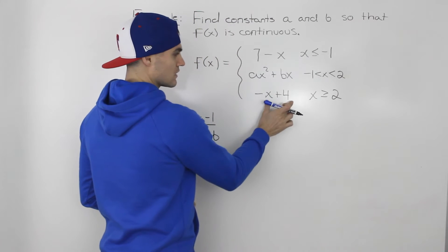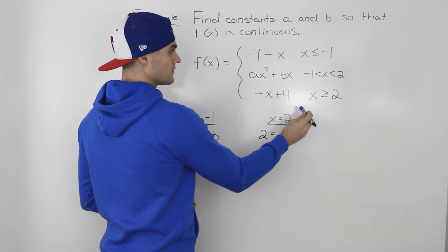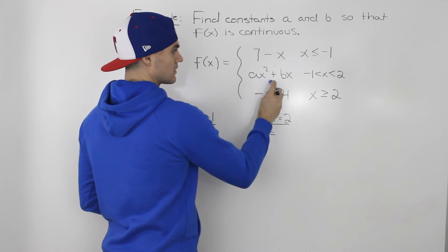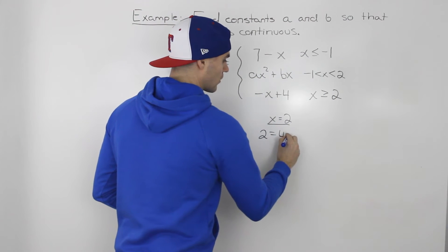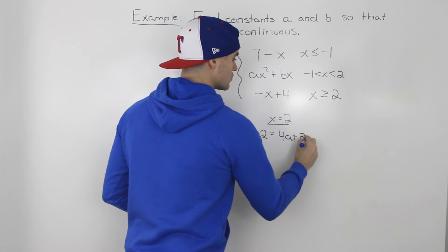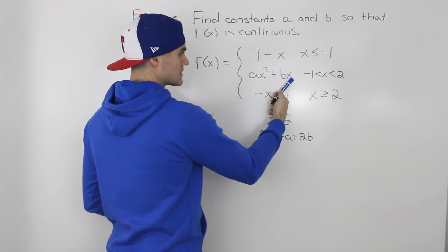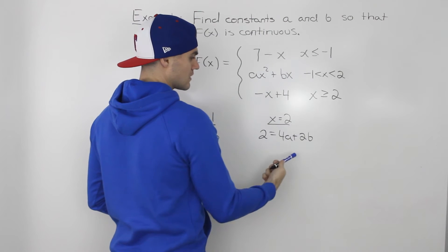That's the y value of this piece at x equals 2. And if we plug in 2 for x for this piece here, we would end up getting 4a plus 2b. Because 2 squared is 4, and then this 2 is by itself attached to the b.